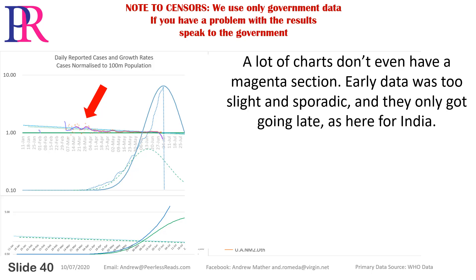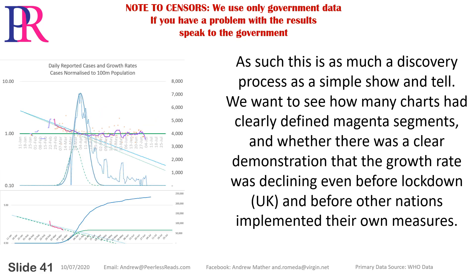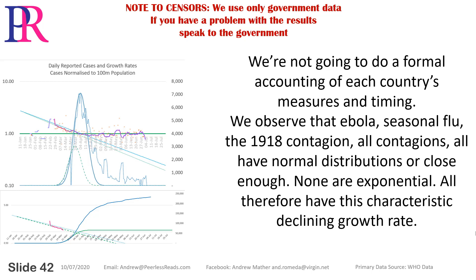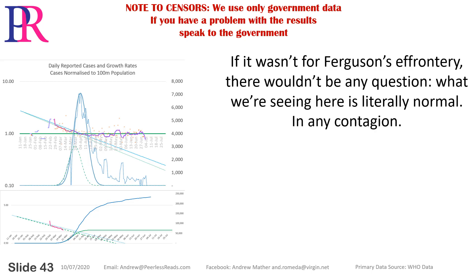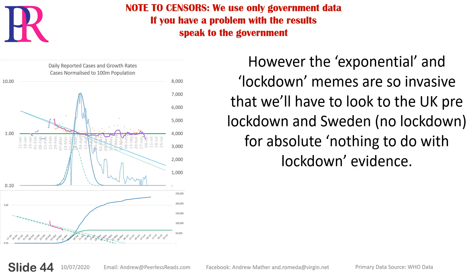A lot of charts don't even have a magenta section — early data was too slight and sporadic, as here for India. So this is as much a discovery process as a show and tell. We want to see how many charts had clearly defined magenta segments and whether the growth rate was declining even before lockdown in the UK and before other nations implemented their own measures. We observe that Ebola, seasonal flu, the 1918 contagion — all contagions — have normal distributions or close enough. None are exponential. All therefore have this characteristic declining growth rate. We'll have to look to the UK pre-lockdown and Sweden with no lockdown for evidence entirely independent of lockdown.